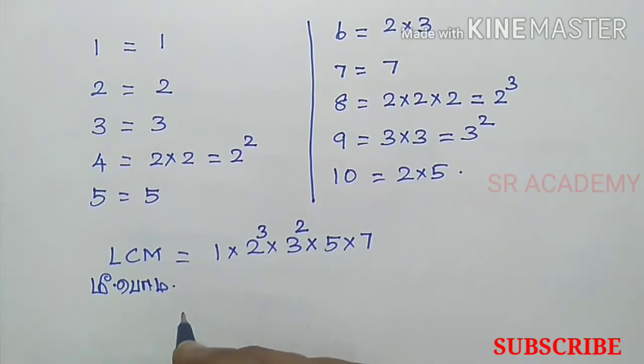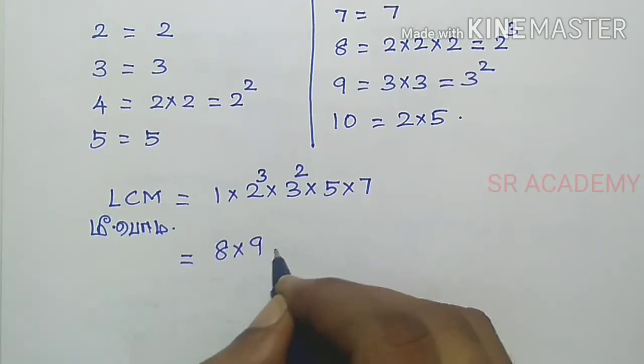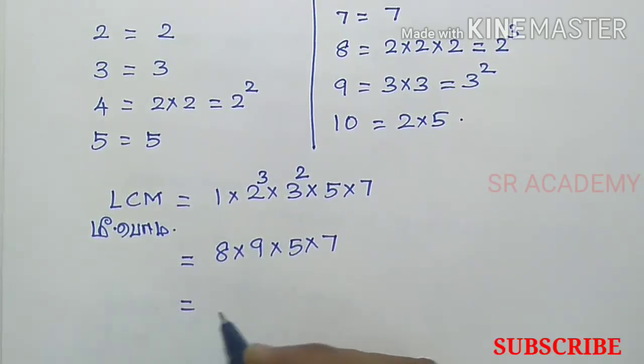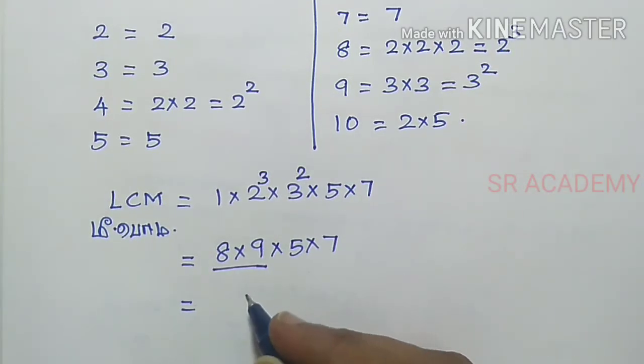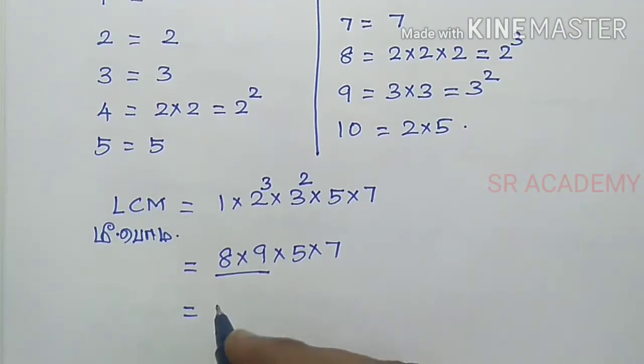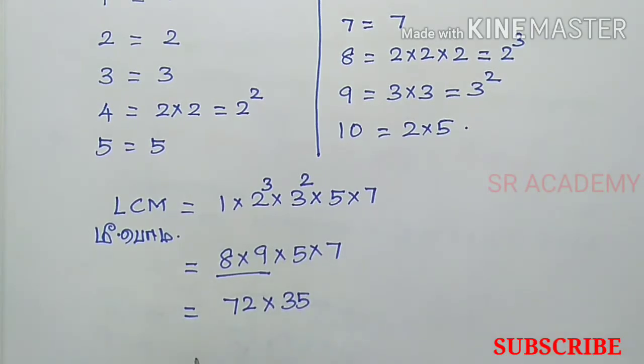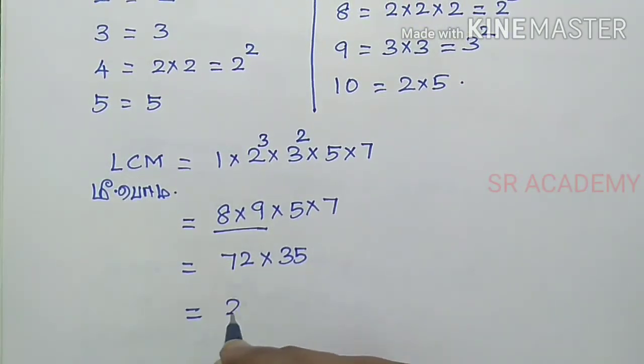Now we multiply: 2 cubed is 8, times 9, times 5, times 7. That equals 8 times 9 is 72, times 35, which equals 2520.